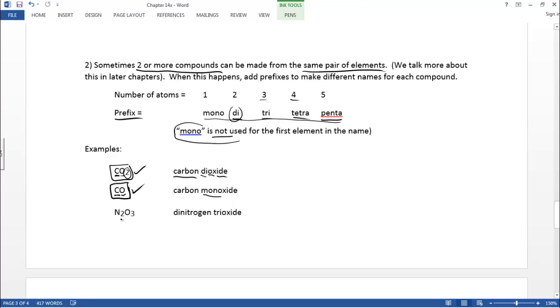Last example, two nitrogens, three oxygens. That compound is going to be called dinitrogen because there's two nitrogens. And then we got ox for oxygen. Oxide. Add the three trioxide. Okay, when do we use the prefixes and when do we not? We'll talk more about that in later chapters.